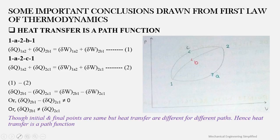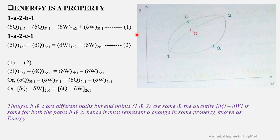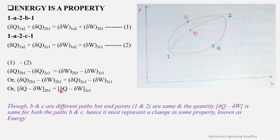The second important conclusion is that energy is a property — that is, a point function — and does not depend upon the path. Analyzing the same two cycles and subtracting the equations, we find that (δQ − δW) for path two–B–one equals (δQ − δW) for path two–C–one. Though B and C are different paths, this quantity is the same for both, indicating it must represent a change in some property.